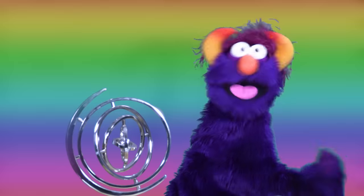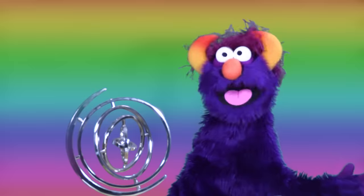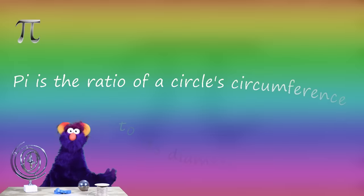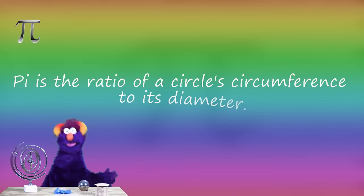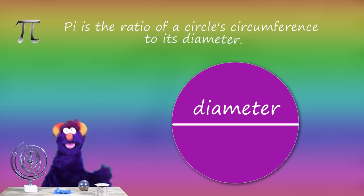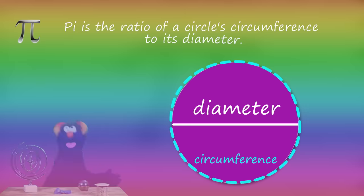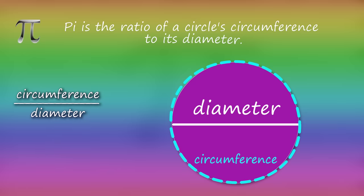Pi pops up all over the place when you study math and physics. It's very important in the study of circles. Pi stands for the ratio of a circle's circumference to its diameter. The diameter is the distance across the circle. The circumference is the distance all around the edge of the circle. Divide the circumference by the diameter and what do you get? Pi.